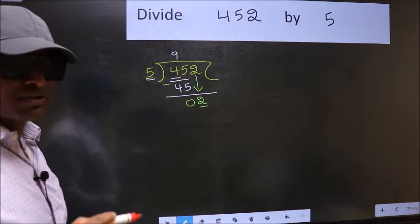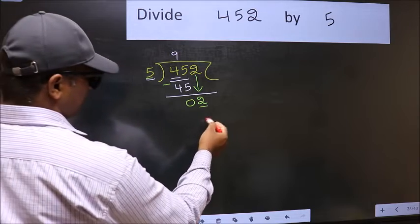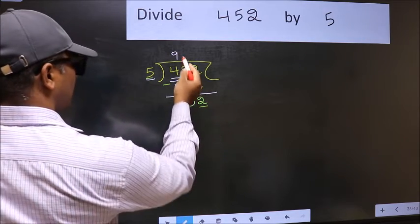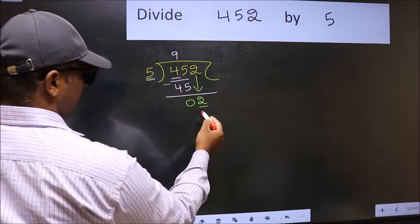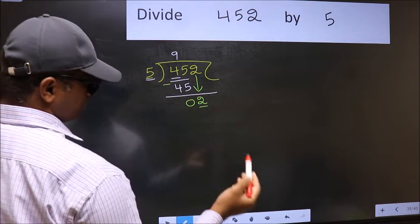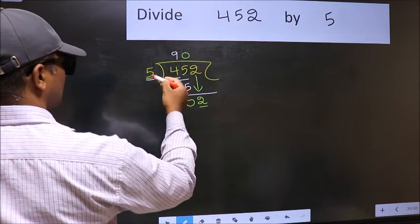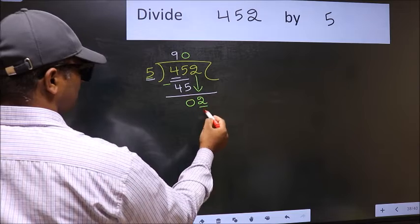Instead, what you should think of doing is, what number should we write here? If I take 1 here, we will get 5. But 5 is larger than 2. So what we should do is, we should take 0. So 5 into 0, 0.